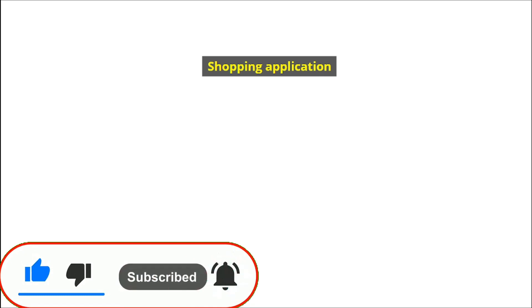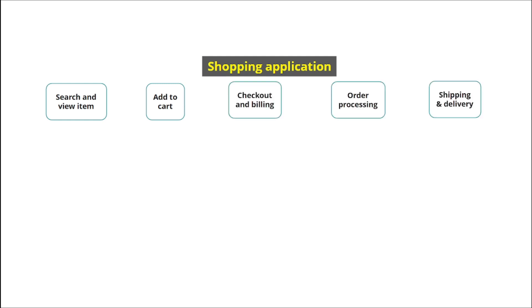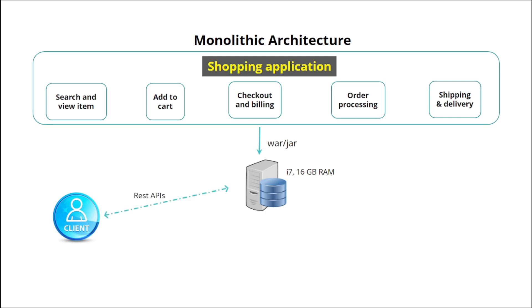Now let's understand with the help of a simple example of a shopping application. We are all aware of e-commerce websites which have multiple features: users can search and view items, add items to the cart, checkout and billing, order processing, and finally shipping and delivery. When all these features are coded in a single code base and deployed as a whole, this is known as monolithic architecture. A client can then call this server using REST API or some other method.